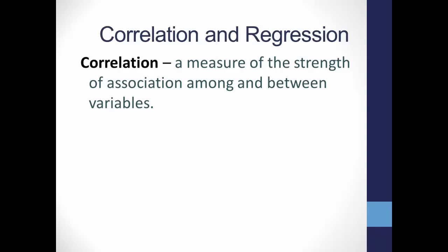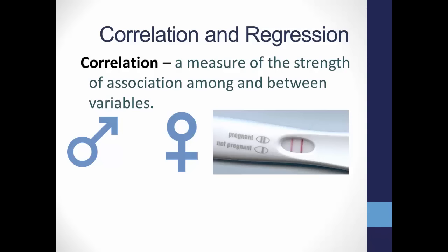Correlation is a measure of the strength of association among and between variables. You first attempt to answer the question: is there any relationship between two or more variables? You can do this with nominal-level variables — for example, is a person's sex correlated with pregnancy? Being female would not cause you to become pregnant, but the two variables are strongly correlated; there is a relationship between them.